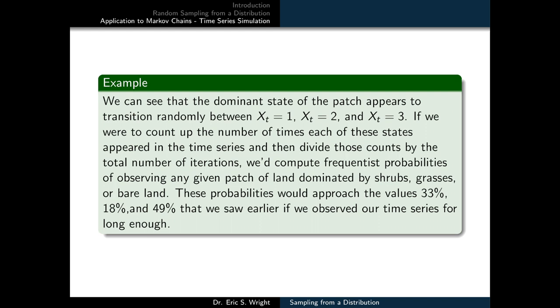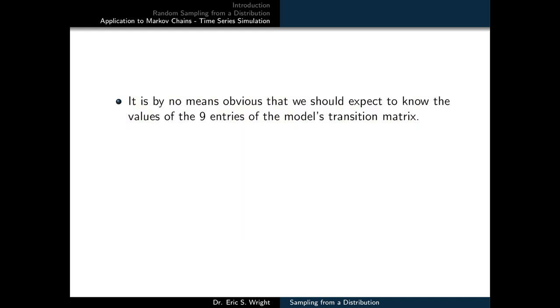So what we've just seen is really just a conceptual illustration of how we would simulate a system that can be modeled by a discrete time Markov chain. In practice, we wouldn't really sample so mechanically by imagining creating so many ones, twos, and threes in a set and just drawing them from a hat. We would go back and use something like the random number generator and the linear congruential generator that we described earlier inside of a computer program, and that'll be the subject of the technological companion to this video lesson. However, before we get there, there's a few things that we should establish about what it is that we've actually done and what it is that we still have to do if we expect to be able to model systems effectively with Markov chains. And one of the biggest outlying problems that we've got is that it's by no means obvious that we should expect to know the values of the nine entries of our model's transition matrix.